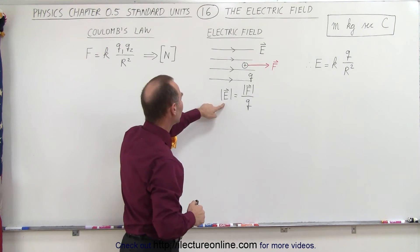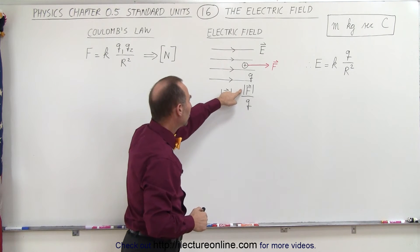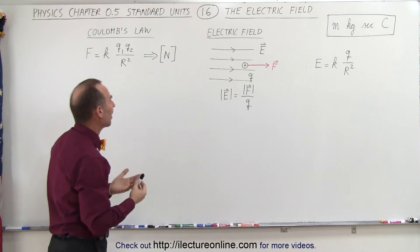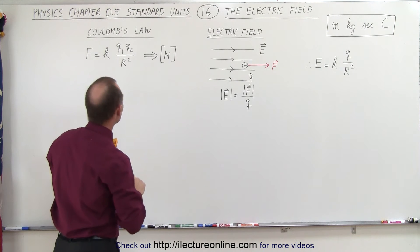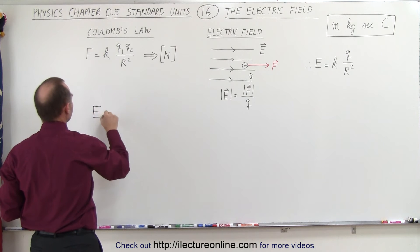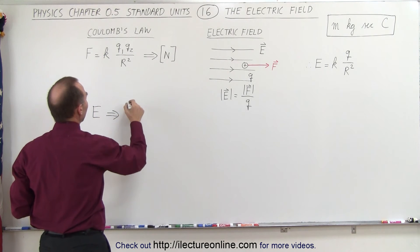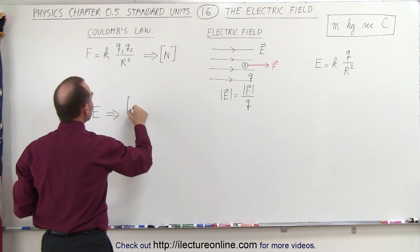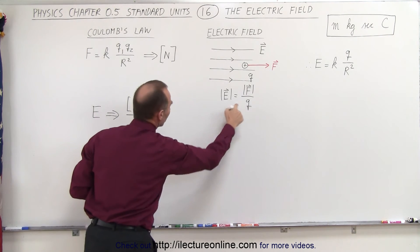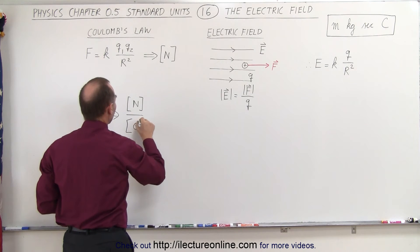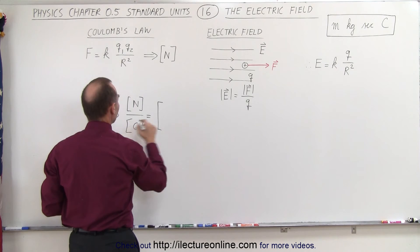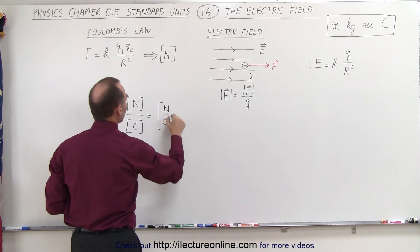If the electric field is defined as the force between two charges divided by q, that gives us a way to find the units for the electric field. The unit for the electric field can be defined as the unit for the force, which is newtons, divided by the unit of the charge, which is coulombs. Therefore, we now know that the units for the electric field must be newtons per coulomb.